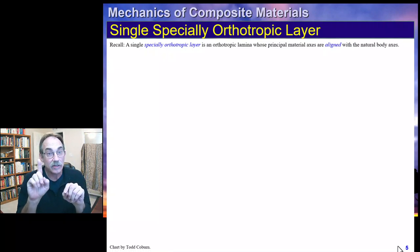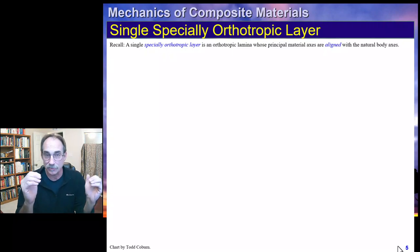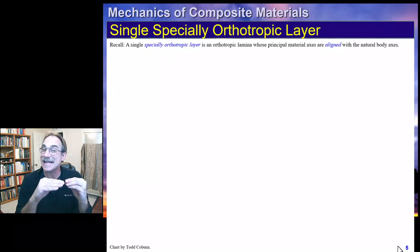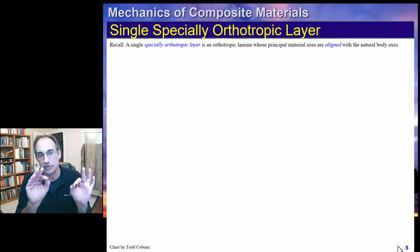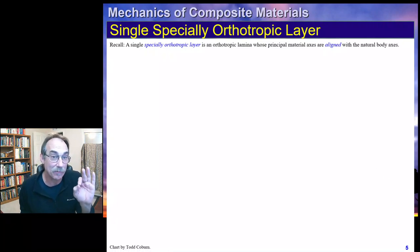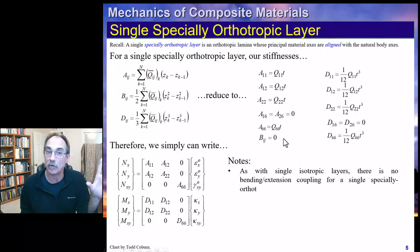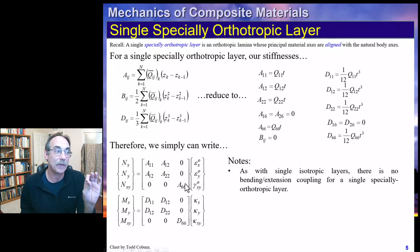The first special case is a single lamina that is specially orthotropic — orthotropic and aligned with the body coordinates. For the ABD matrix of a specially orthotropic lamina, the B matrix vanishes, giving uncoupled extension-bending behavior. We also find that extensions are not coupled with shears, and bending is not coupled with twist. If the beam is exposed to curvature in only the x direction, stresses can be written as a function of just the D11 parameter.